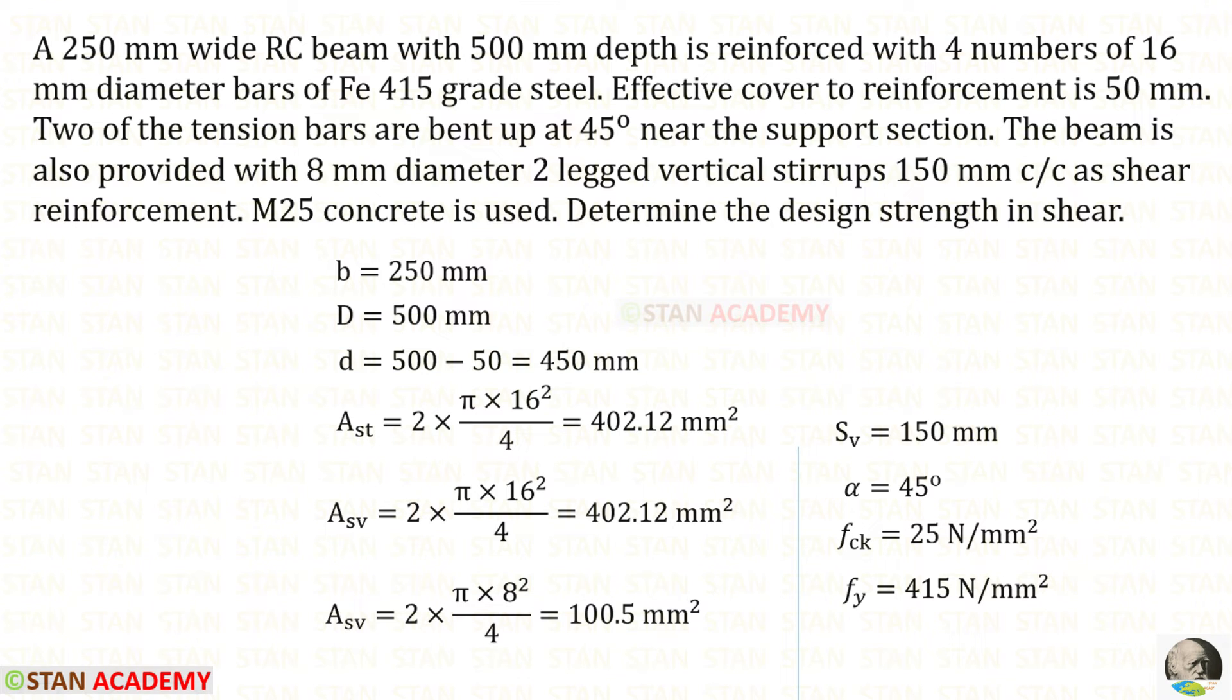Most of the data is same. The width and the overall depth D are given as 250 and 500. The effective cover is 50. Using that, we can find the effective depth d. FCK is 25 and FY is 415. Out of the four numbers of rebars, two of them are bent up at 45 degree. When we find AST, we should not consider the bent up bars. So, 4 minus 2, it will be 2. In this case, AST will be 2 into π into 16 square upon 4. We will get this. Now, for the bent up bars, we have to find the area ASV. Two of the bars are bent up. So, 2 into π into 16 square upon 4. We will get this. Two bars are not bent up, they are straight, and two bars are bent up. In this case, for AST and ASV, we will get the same value.